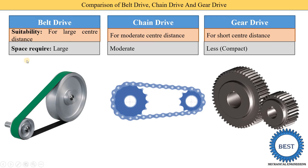For belt drive, the space required is larger. This space requirement is related to suitability — where it is suitable for large center distance, the space requirement is also large. In a chain drive, the center distance is moderate, so space required is also moderate. In a gear drive, the space requirement is less, or compact.